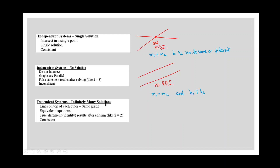Lastly, we can have a dependent system where we have infinitely many solutions, which means one line sits right on top of another, giving infinitely many points of intersection. This happens when both the slopes and the y-intercepts of the two lines are the same — in other words, they're identical lines.